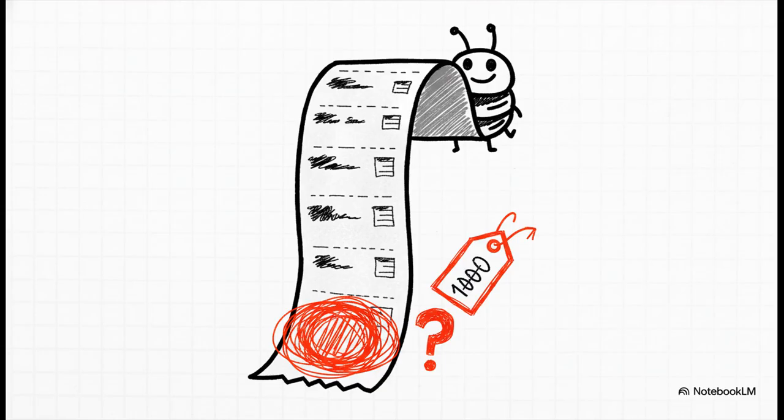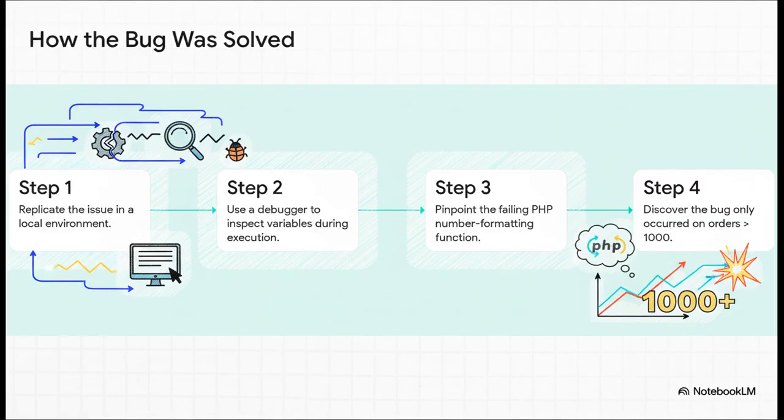Let me tell you a quick story that shows the power of mastering your debugger. So, the team was dealing with this bizarre bug where order totals were just wrong, sometimes. They couldn't figure out why. It was random and causing huge problems during big sales. Now, the crucial thing here is how the engineer tackled this. He didn't just guess. He was methodical. He replicated the issue on his own machine, then used a debugger to walk through the code line by line. This let him see the exact moment a variable went haywire, and he pinpointed a very specific formatting issue in a PHP function that only failed on numbers greater than 1000. I mean, without a debugger, finding that would have been like finding a needle in a haystack.